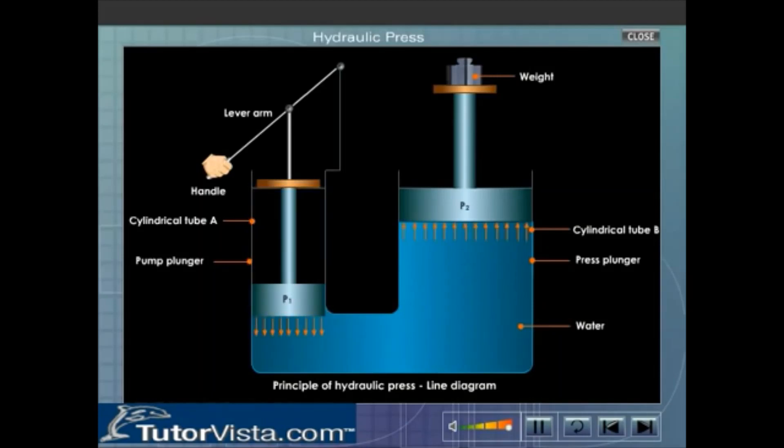Since the area of cross section of the pump plunger is less than that of the press plunger, the applied force is multiplied. Thus by applying a small force on the smaller cylinder we can lift or compress a large weight kept on the piston of the press plunger.